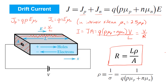The final constant here is the resistivity ρ of the semiconductor material. Its inverse, σ, is the conductivity of the semiconductor, and it depends on the carrier mobilities and the carrier concentrations, as shown here.